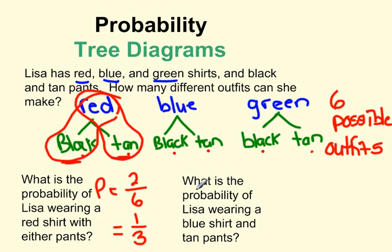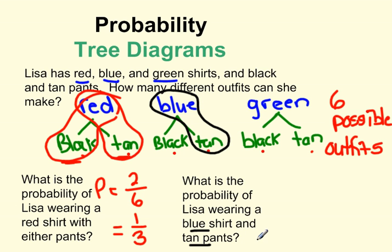The next question asks: what is the probability of Lisa wearing a blue shirt and tan pants? We're going to look at our tree and find the blue shirt and the tan pants. There's only one possibility of wearing a blue shirt and tan pants out of a total of six. So the probability is one over six.